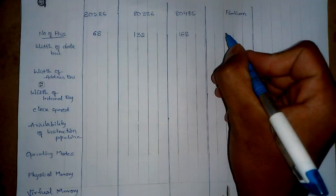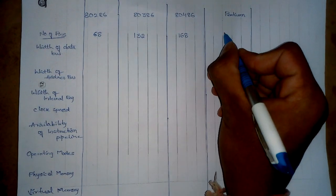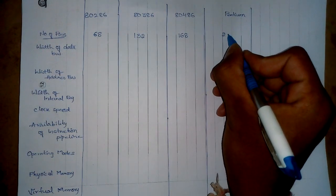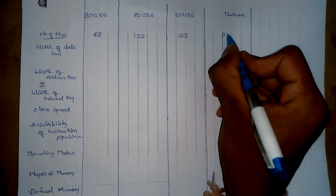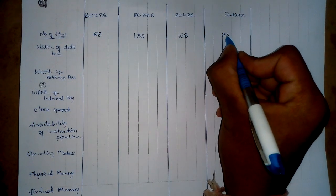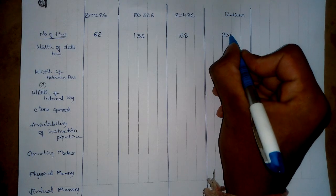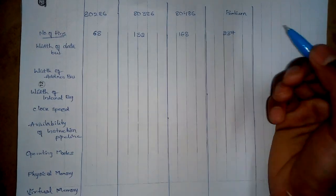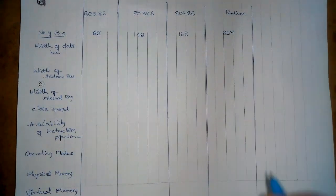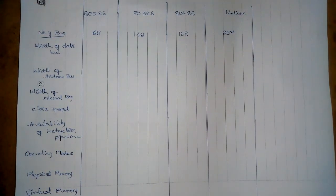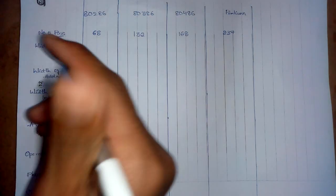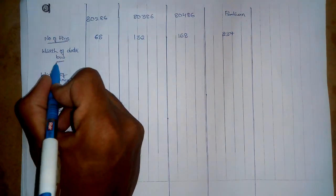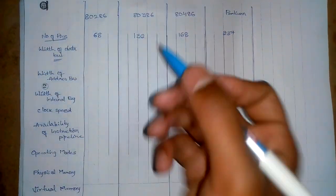The Pentium processor has 237 pins total. Now coming on to the data bus — as you know, the data bus is a bi-directional bus.